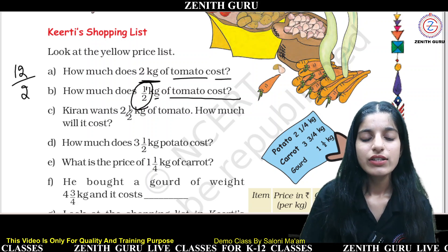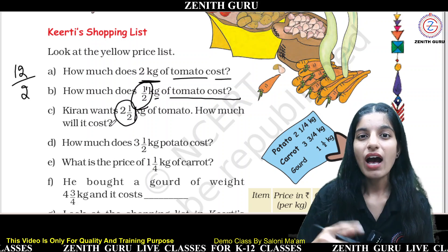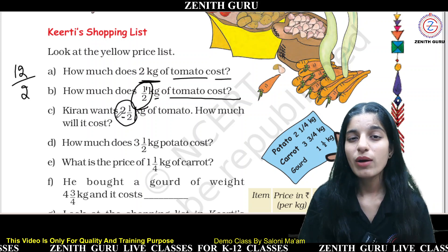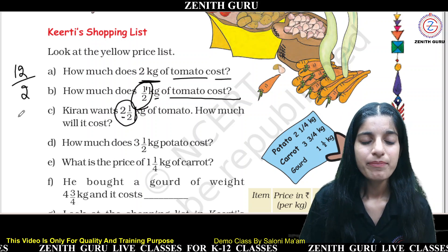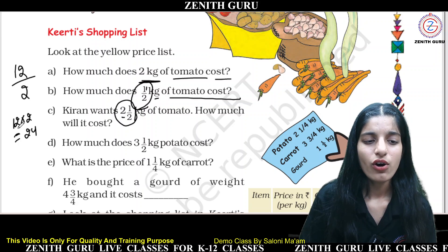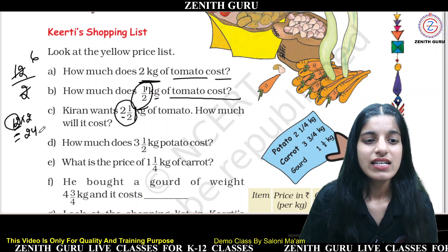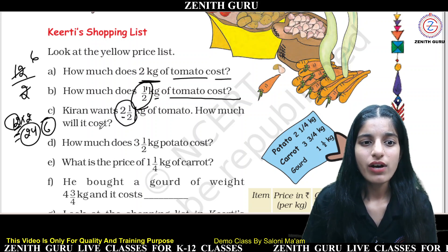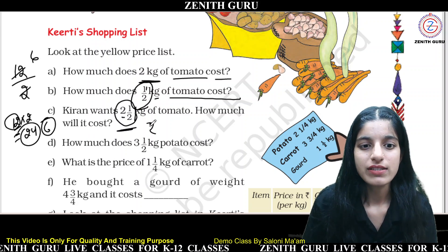To find the cost of 2 and a half kg of tomato: 2 kg costs 12 × 2 = 24 rupees, and half kg costs 12 ÷ 2 = 6 rupees. Adding them together: 24 plus 6 equals 30 rupees.